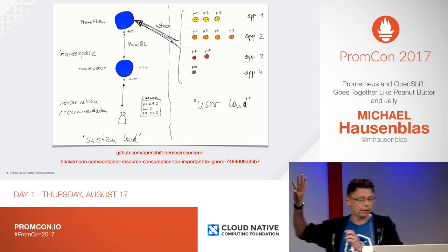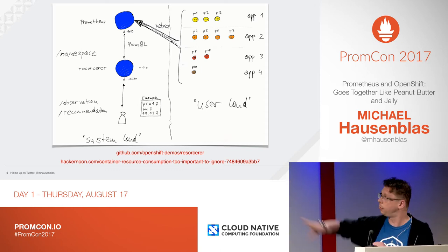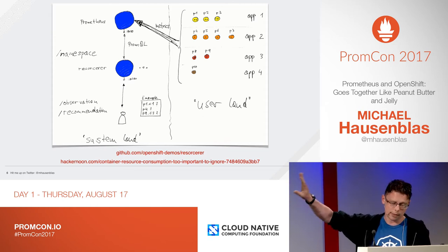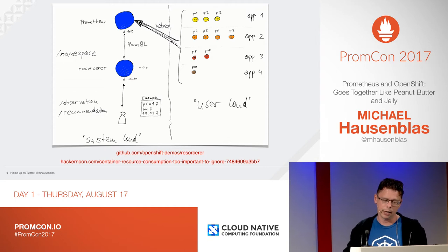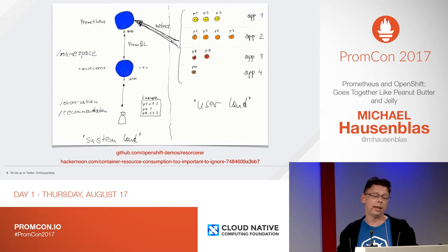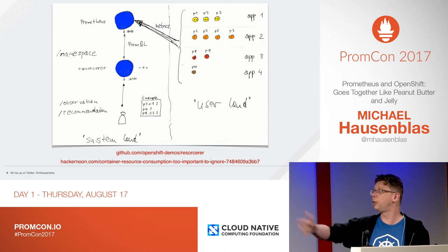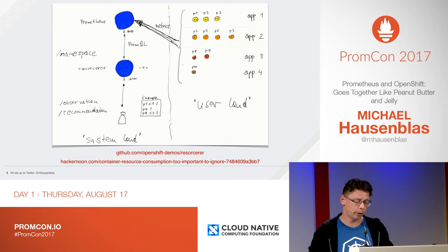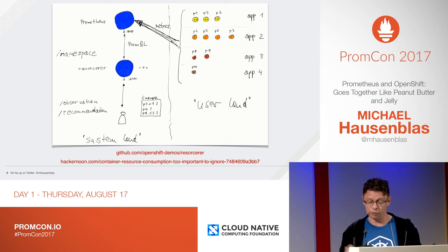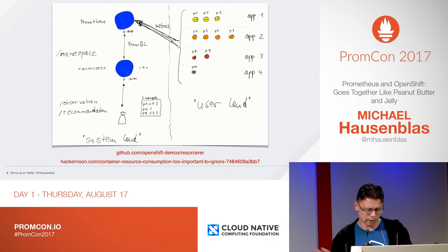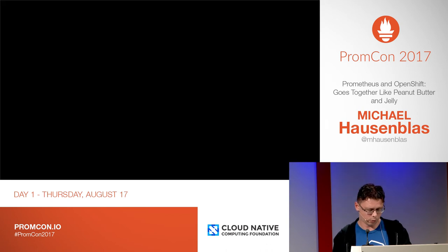Essentially, Prometheus is taking all these metrics from different pods where different containers run, and that is all in user land. In system land, you have Prometheus and you have Resourcer, which is essentially this POC that does all the heavy lifting — or outsources all the heavy lifting to Prometheus — and then comes up with recommendations. You can then rescale the pod or container. If you're interested in the blog post or the code, check out this link.